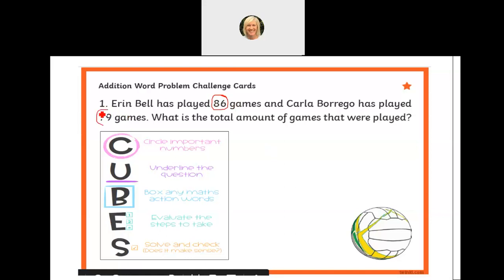The next step in CUBES, the U, asks us to underline the question. I could underline the whole thing, but that's not going to give me any more information or clear things up. I'm going to underline the part that's actually asking me for an answer, and here it is: what is the total amount of games that were played?